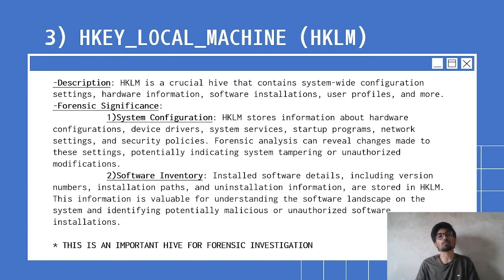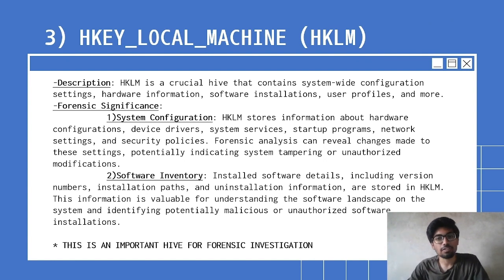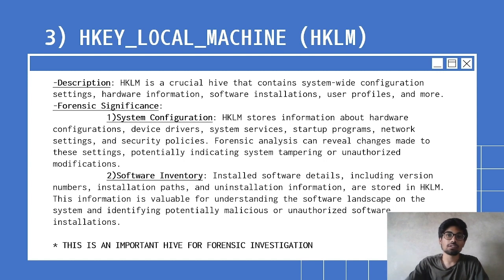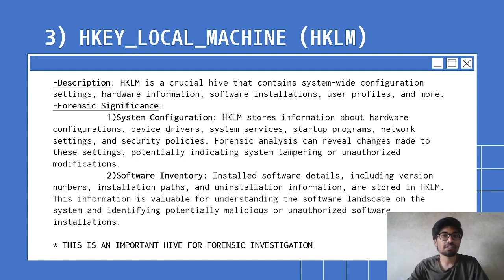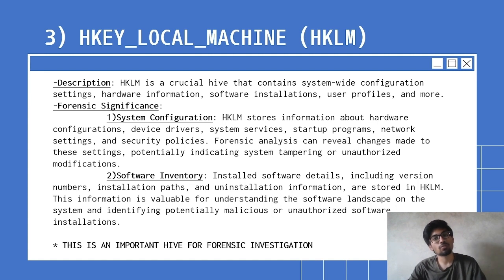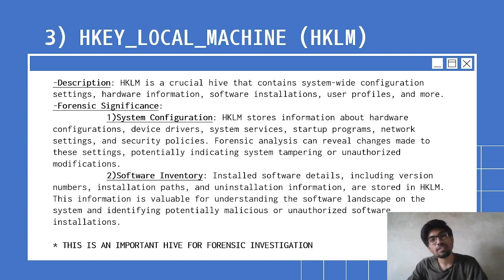The third hive is Local Machine (HKLM), which is also important for the forensic aspect. It contains the entire system configuration — which hardware devices you have installed and connected. All that information will be retrieved through local machine. For example, how many USBs have been injected — that will also be revealed here. If an officer goes to a crime scene and local machine shows that 51 USBs have been injected till now, we will have to collect those 51 USBs as they may contain crucial information — from software installation to user profile, all that data is here. Its forensic significance is that it reveals system configuration and software inventory.